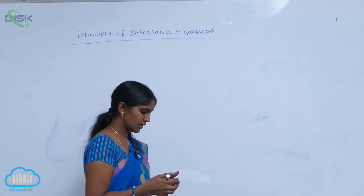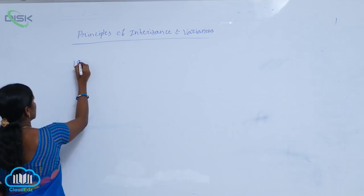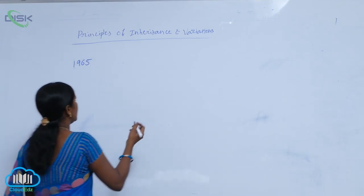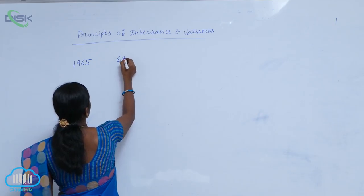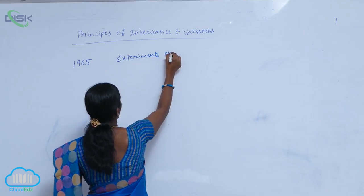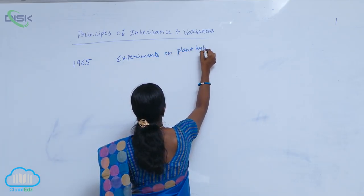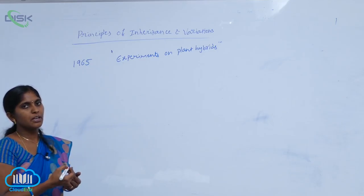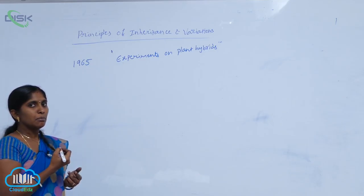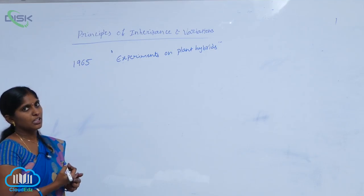Mendel published his work in 1865 in a publication titled Experiments on Plant Hybrids. He published his complete hybridization work: Monohybrid Cross, Dihybrid Cross, and Mendel's Principles, which are principles of inheritance.